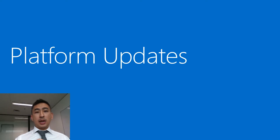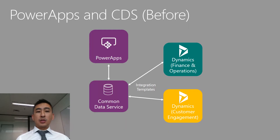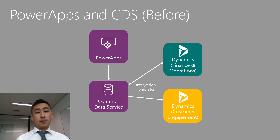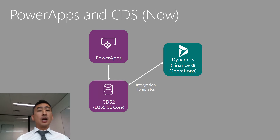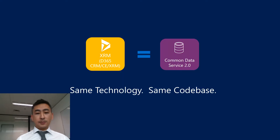Let me talk specifically about what has just been released. Previously, Power Apps sat on top of the Common Data Service and you had to integrate data into it — for instance, Dynamics F&O and Dynamics Customer Engagement data had to be flowed into CDS before you could use it. That's all changed with the Spring Release. CDS 2 has now been uplifted to the Dynamics 365 Customer Engagement core, which is XRM, so all your accounts, contacts, and business data are already there — there is no integration required. F&O isn't quite there yet.